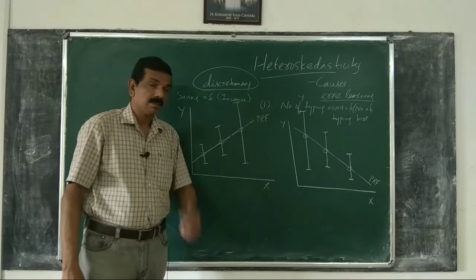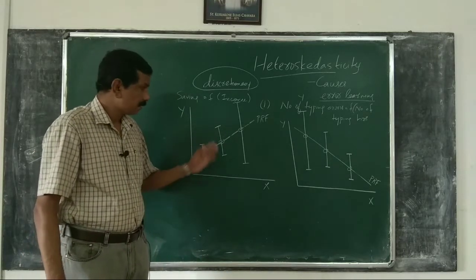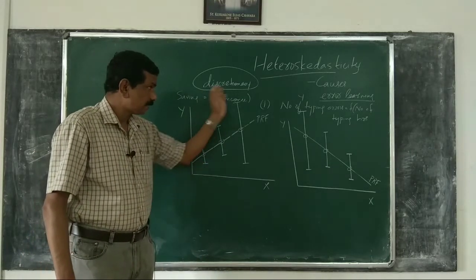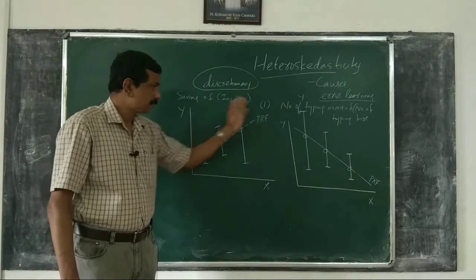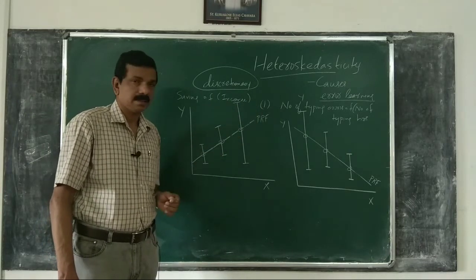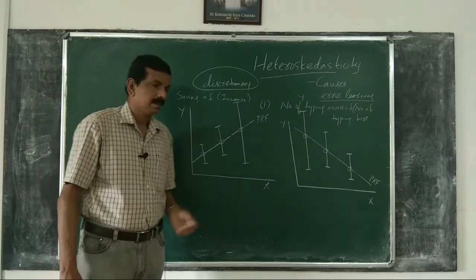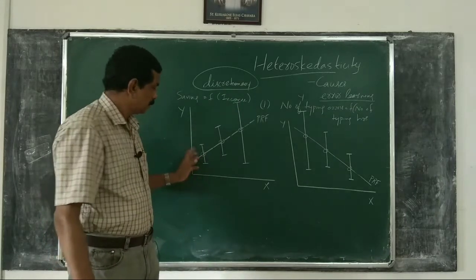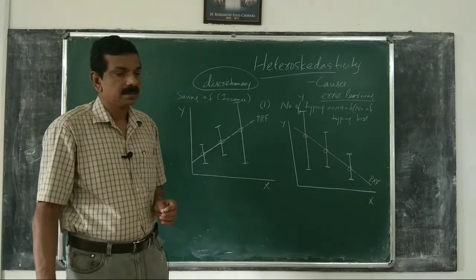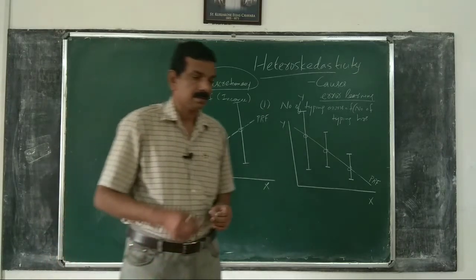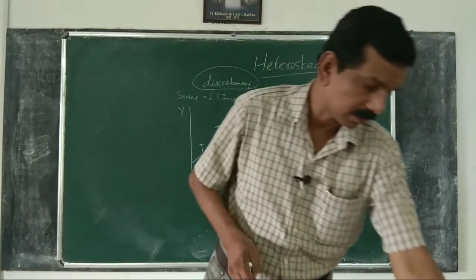We expect error variance to increase. So, in the study of the saving-income relation or consumption-income relation, we generally expect heteroscedasticity. That is the second reason for heteroscedasticity.